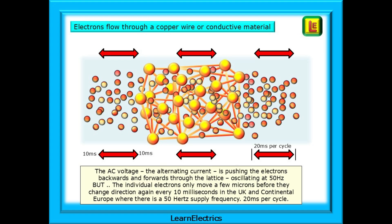When a force, a voltage, is applied to the circuit, the atoms in the copper wire will stop their random movement and all move together in the same direction. If it is an AC voltage, an alternating current, it is pushing the electrons backwards and forwards through the lattice, oscillating at 50 hertz. But the individual electrons only move a few microns before they change direction again every 10 milliseconds in the UK and continental Europe, where the supply frequency is 50 hertz, 20 milliseconds per cycle.